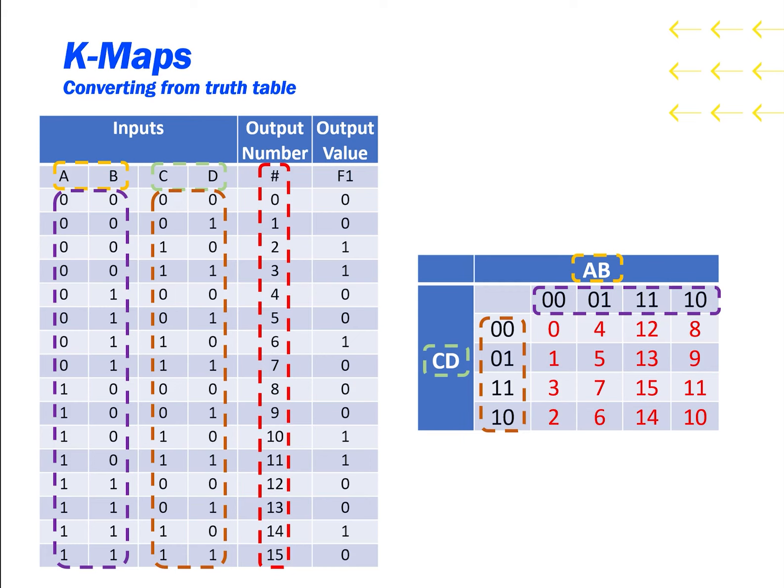Here, I've replaced all of them with the output numbers. If I wanted to get output number 6, I would have to look for 0, 1, 1, 0, 6 in binary. And that's right here.